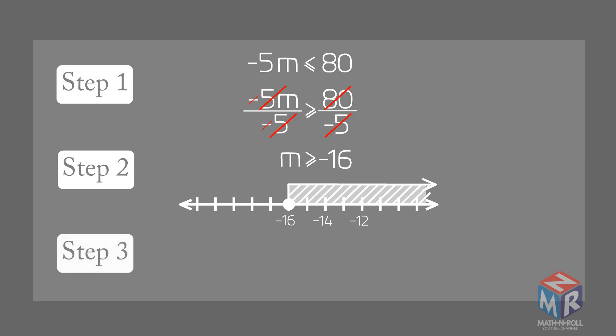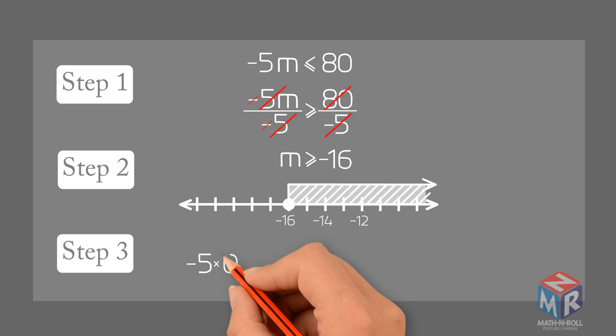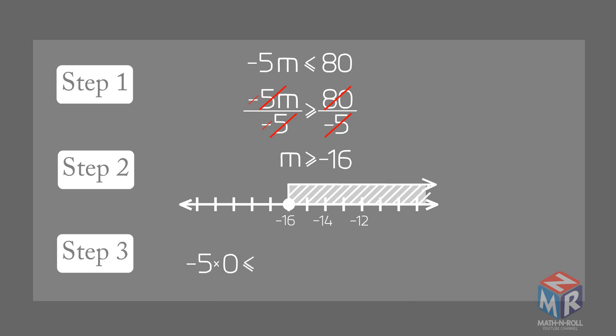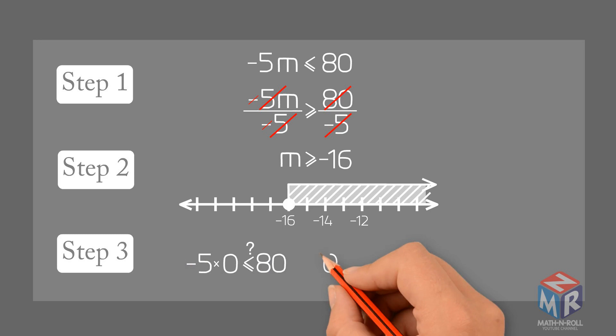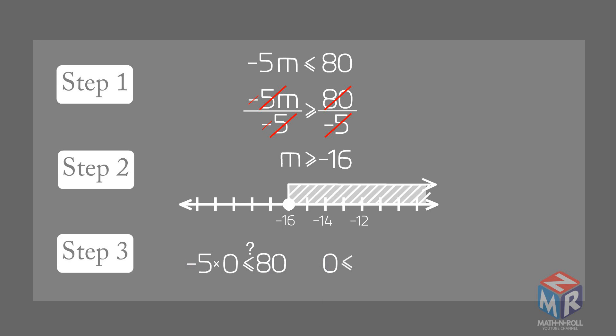Step 3: Check the solution. Substitute a solution from the shaded part of your number line into the original inequality. Substitute 0 for m into negative 5m is less than or equal to 80. 0 is less than or equal to 80. The inequality is true.